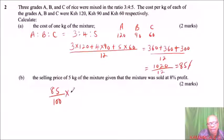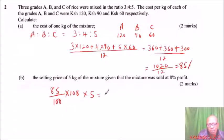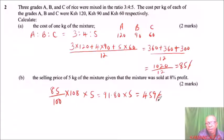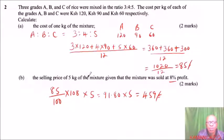At 8% profit: 85 divided by 100 multiplied by 108 multiplied by 5, which is the same as 85 times 1.08 times 5. That gives 91.80 multiplied by 5, which equals 459 shillings. That is the cost of 5 kg of the mixture sold at 8% profit. This is what you do for ratio and mixtures in form three.